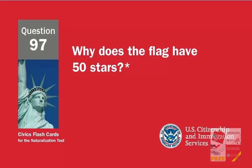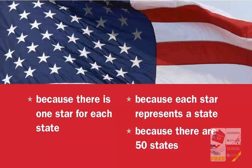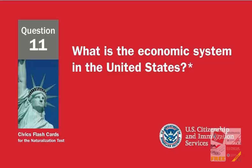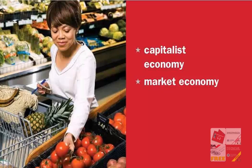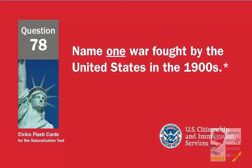Why does the flag have 50 stars? Because there is one star for each state. Because each star represents a state. Because there are 50 states. What is the economic system in the United States? Capitalist economy. Market economy.